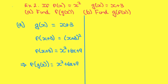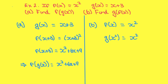Part b: find g of f of x. So first do f of x, so f of x is equal to x squared. Now put x squared into g of x, so g of x squared equals x squared plus 3. Therefore, g of f of x is equal to x squared plus 3.